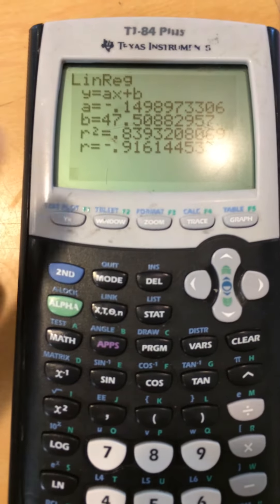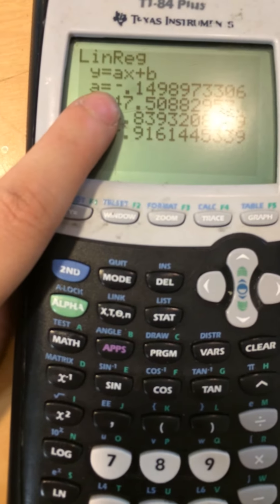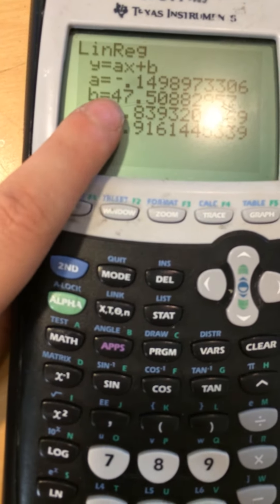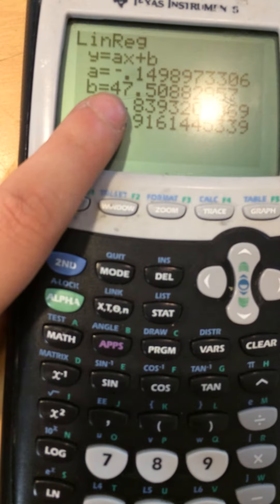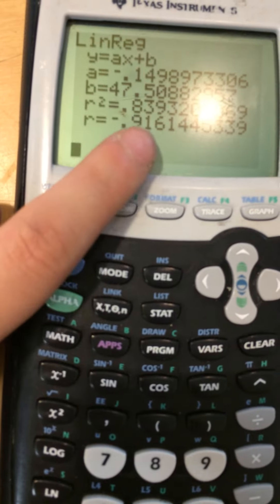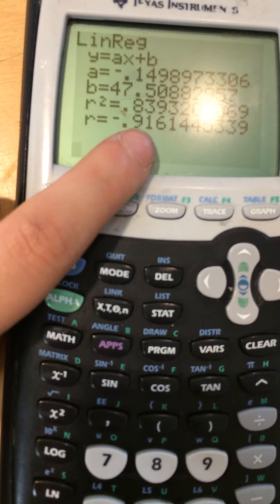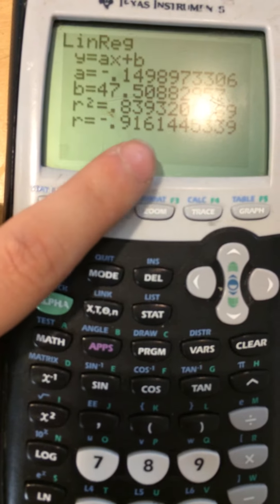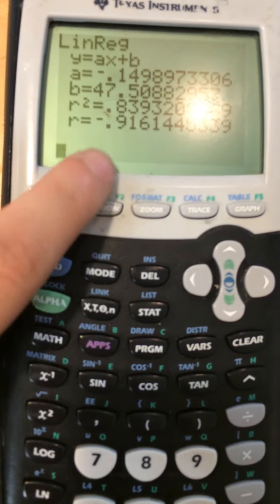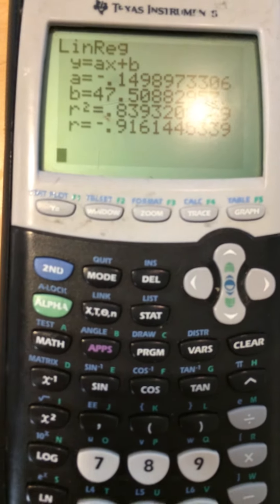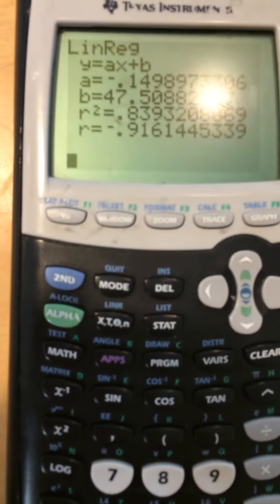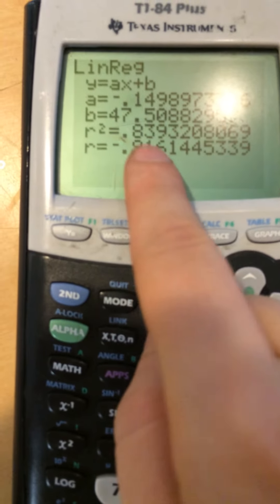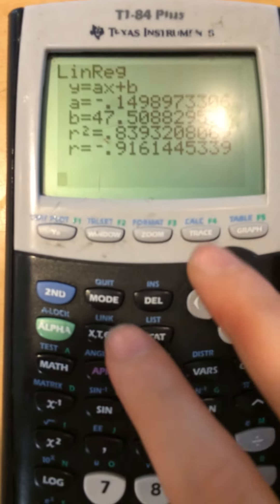So I press enter and it gives me my a. That's the slope. See how it's negative? So it's decreasing. My y-intercept, the b. So presumably when x is 0, that would be the y. R squared and r. This is my correlation coefficient. The closer it is to 1, the better correlation. So it's pretty highly correlated. I know it's going to be decreasing because that's a negative. And I know it's pretty good because that's close to 1.